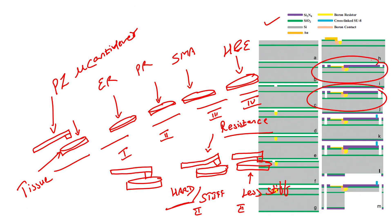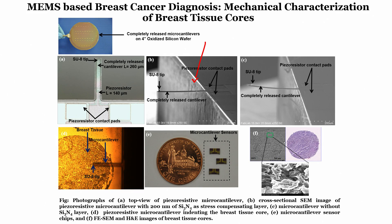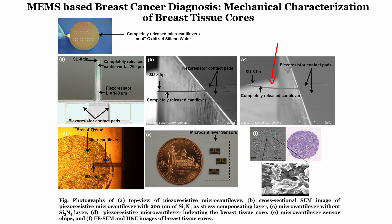The silicon nitride acts as a counter-stress when we use silicon dioxide. If I do not use silicon nitride, the cantilever is bent — there is compression in the cantilever. This compression can be addressed if silicon nitride is used. In this case I deliberately have not used silicon nitride, and that is why the cantilever has more stress due to silicon dioxide.